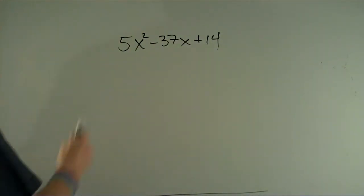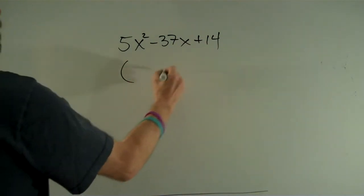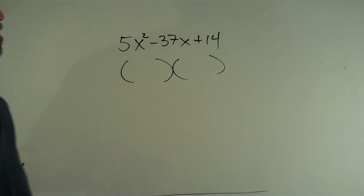Okay, in this video we're going to factor the trinomial 5x squared minus 37x plus 14. Alright, let me get my parenthesis there for my two binomials, and let's see what I know.